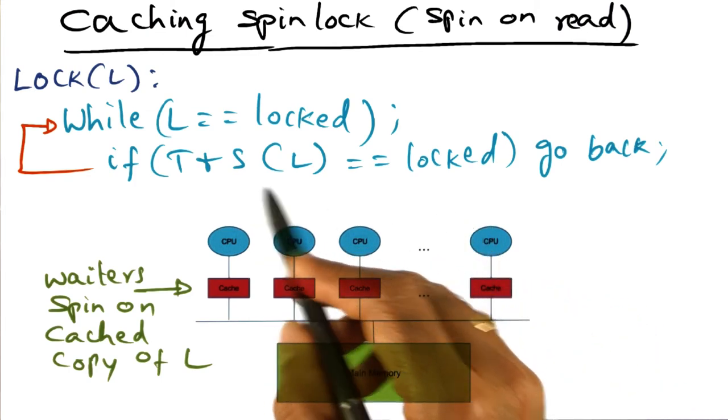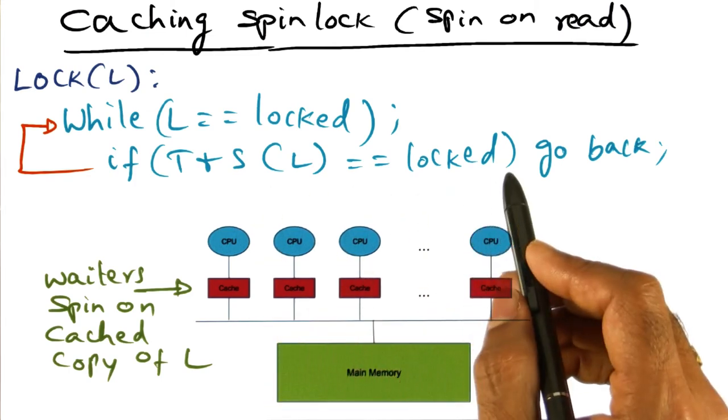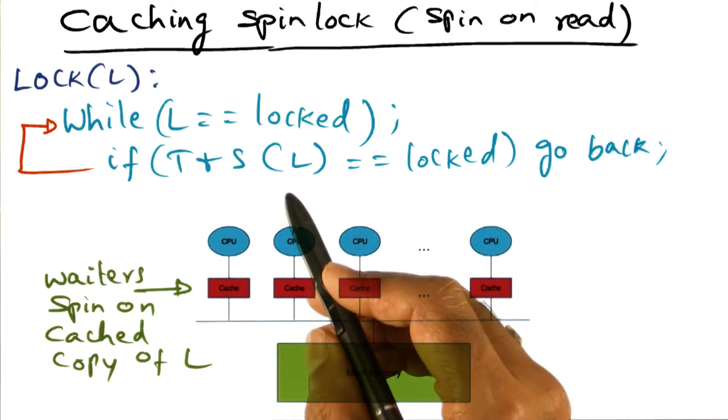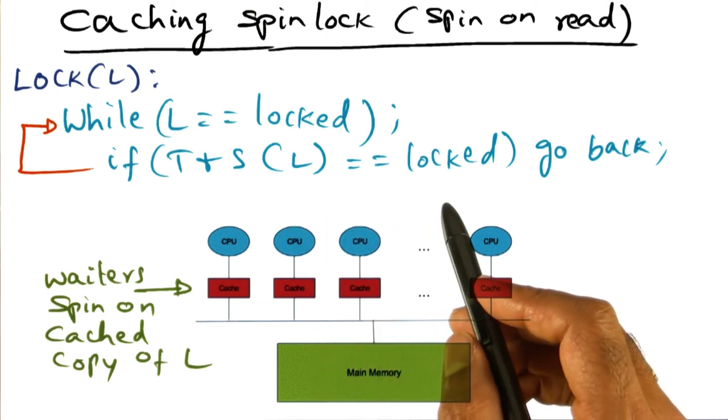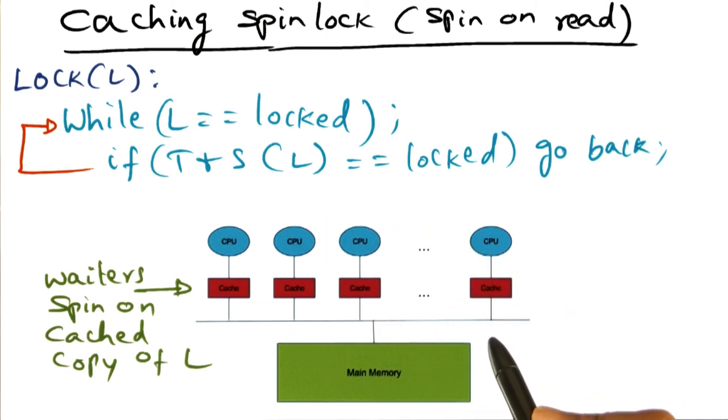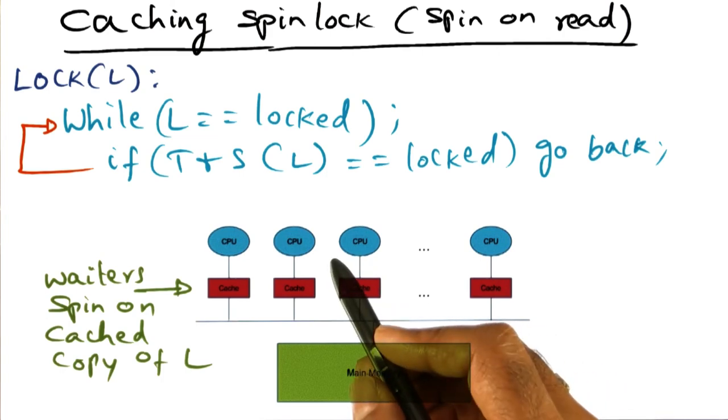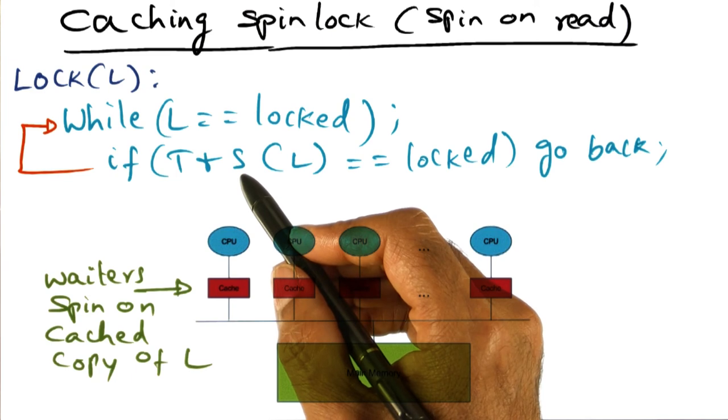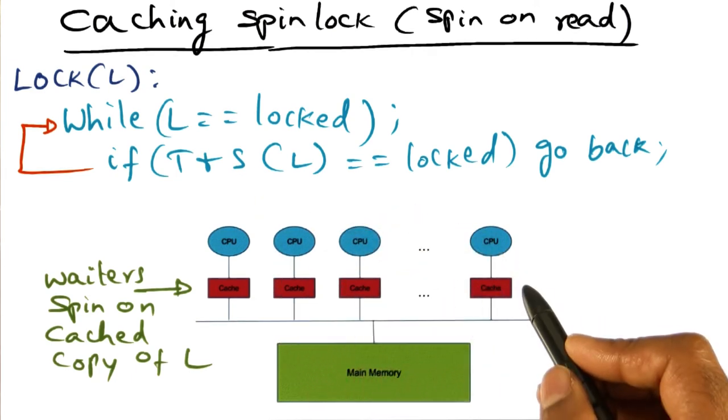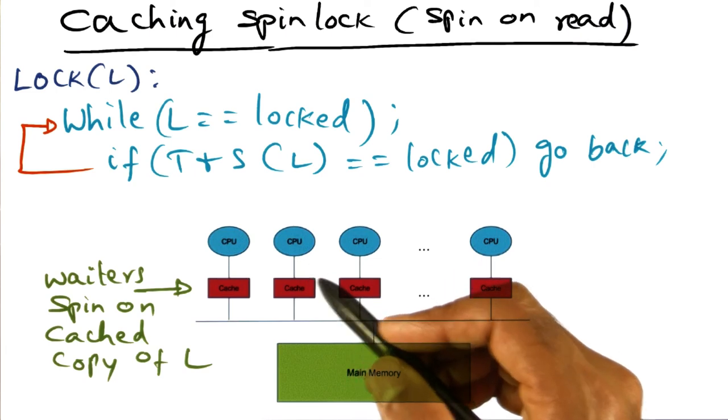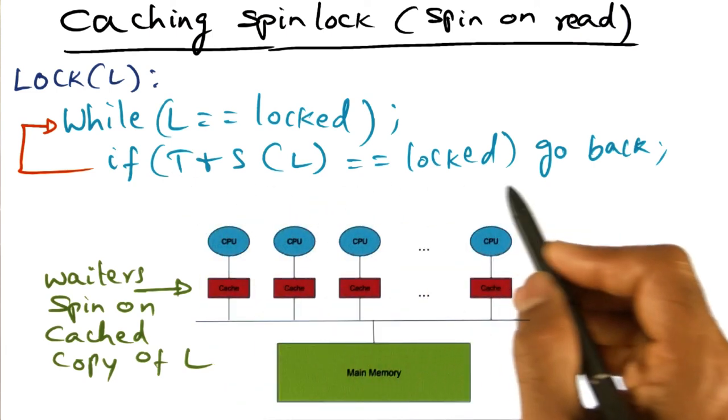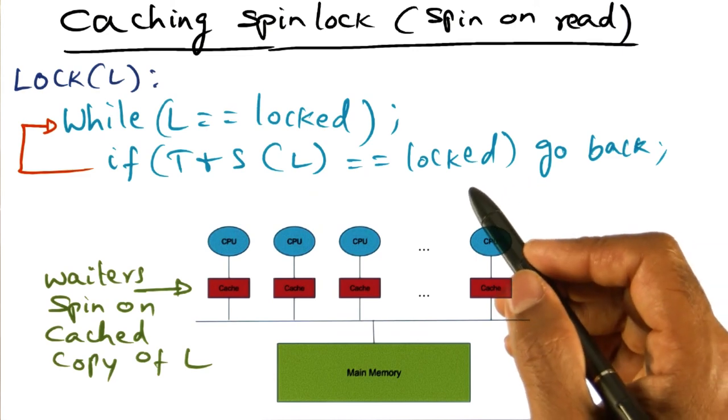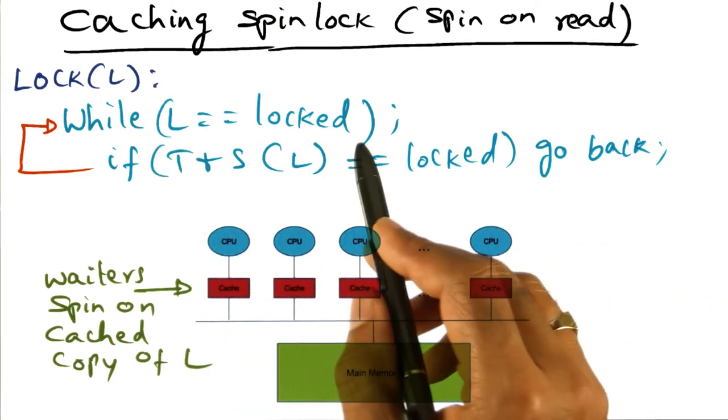And so that essentially means that in a write invalidate based cache coherence mechanism, it's going to result in order of N square bus transactions for all of these guys to stop chattering on the bus. Because every one of these test and set instructions is going to result in invalidating the caches, and as a result you have an order of N square operation that is going to result when a lock is released, where N is the number of processors that are simultaneously trying to get the lock.